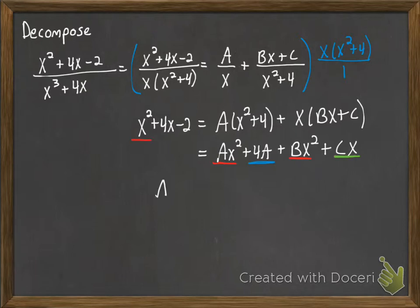So again, ax squared plus bx squared has to be equal to x squared. So we get a plus b equals 1. The cx has to correspond to the 4x. So we get that c has to be 4. And 4a has to correspond to the minus 2. So 4a has to be equal to negative 2.